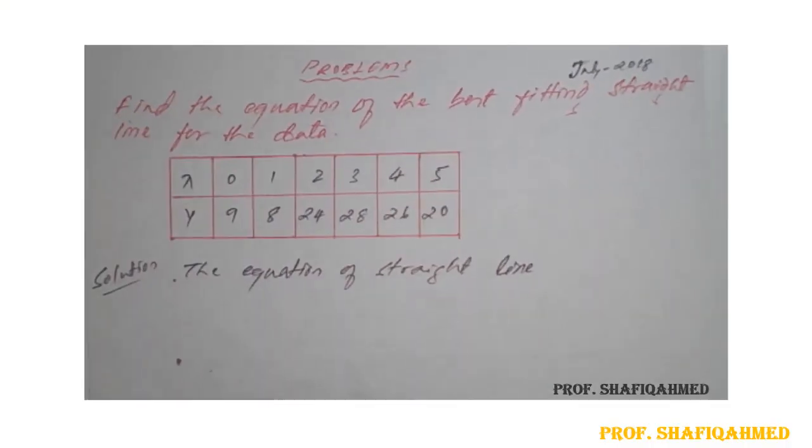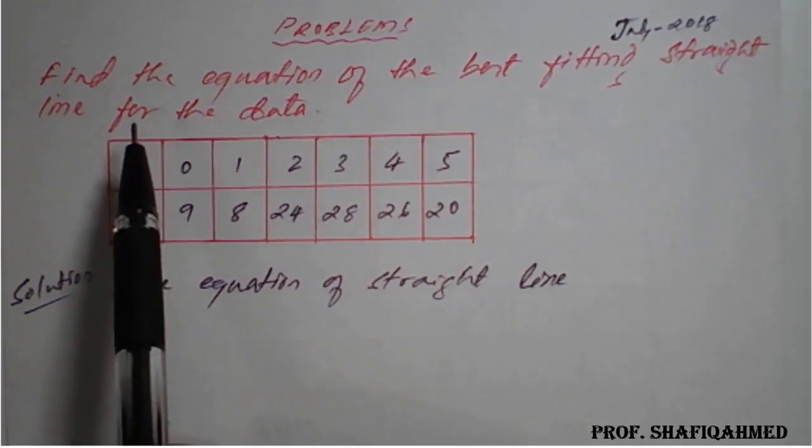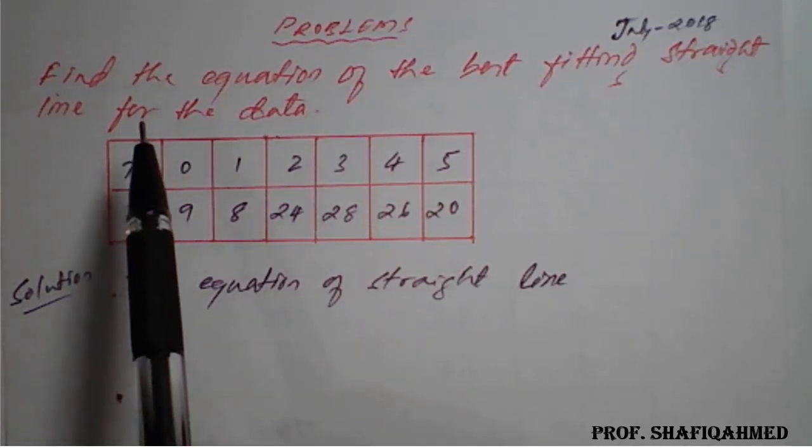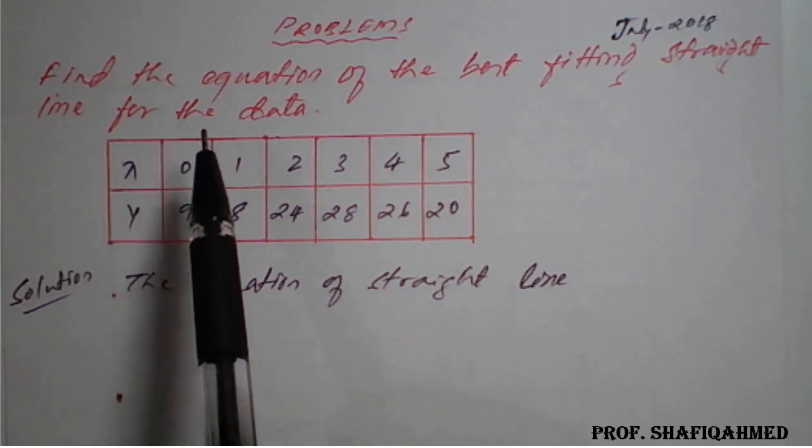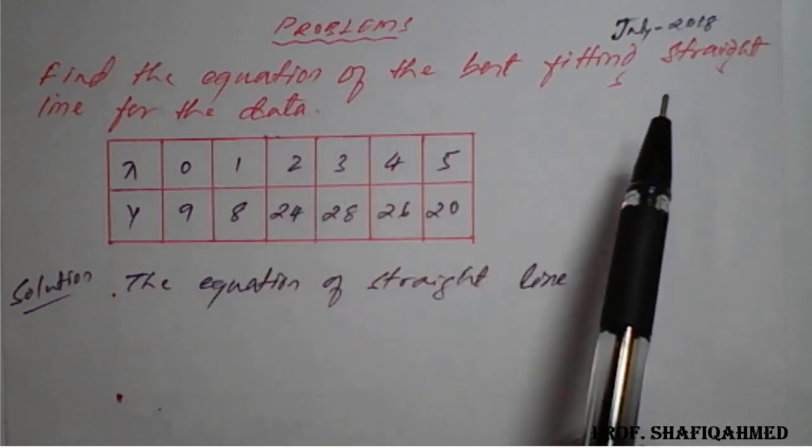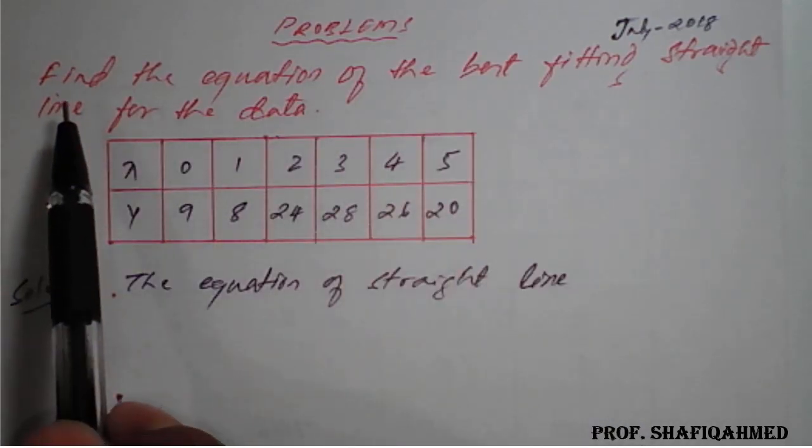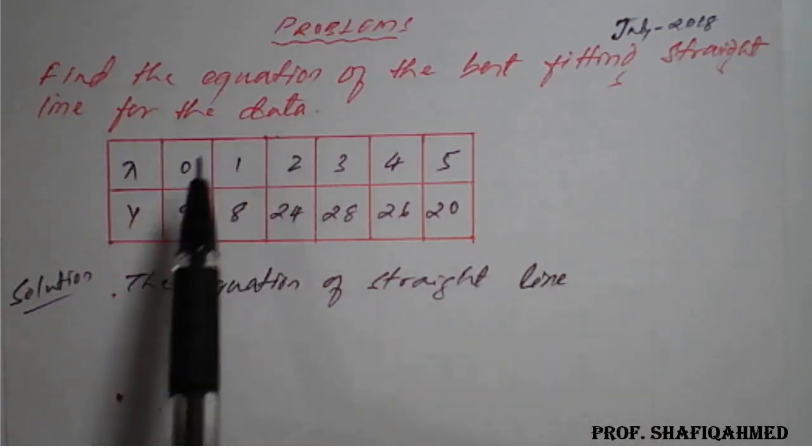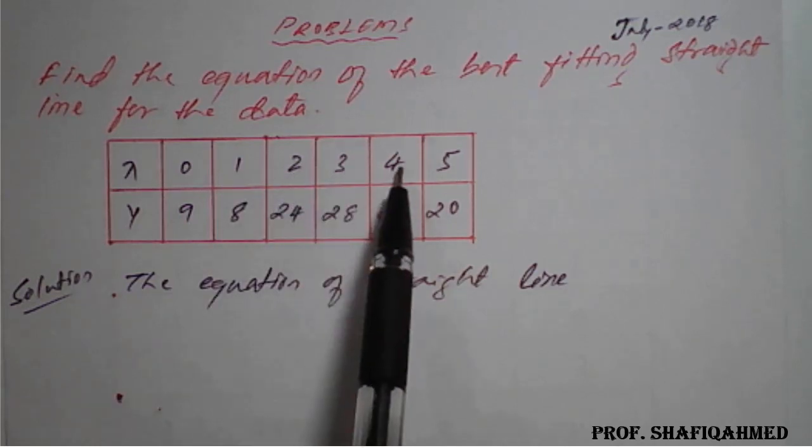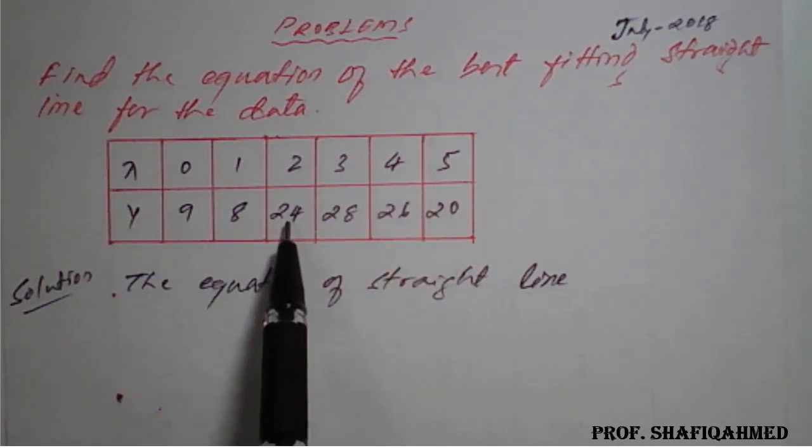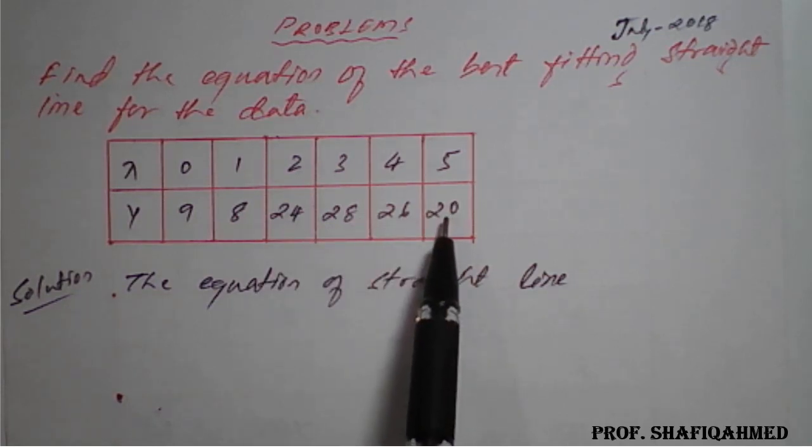Hello students. We will see a problem in curve fitting using least square method for the straight line. The problem is: find the equation of the best fitting straight line for the data. x values given: 0, 1, 2, 3, 4, 5. y values given: 9, 8, 24, 28, 26, and 20.